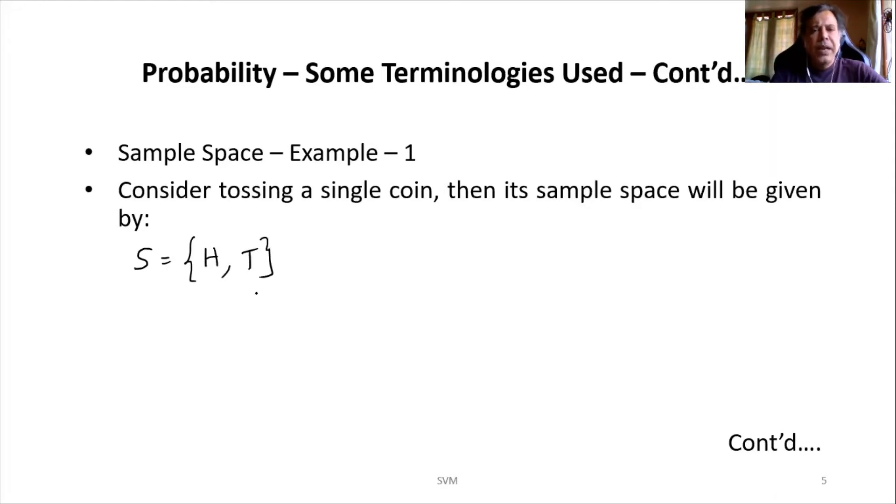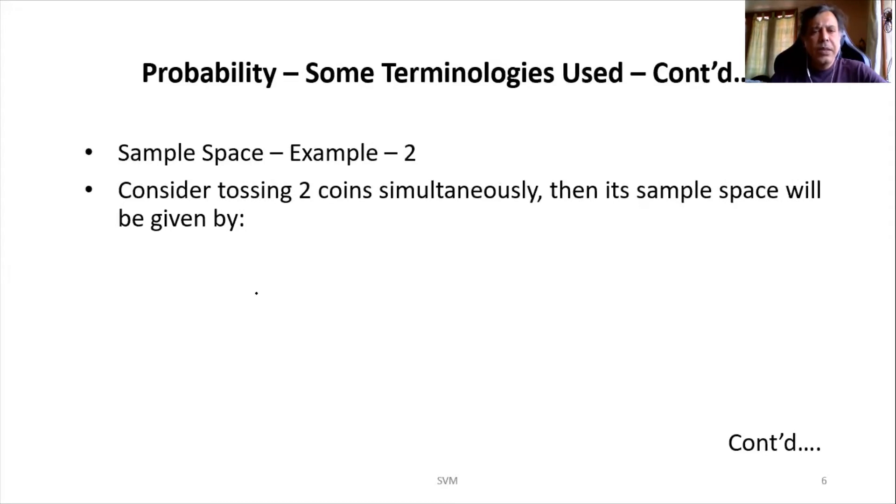Then we will move on to the next example. Consider two coins tossing simultaneously. Then what will be the sample space? So our sample space: first coin as well as the second coin, both can give me heads. That is one possible outcome. First coin can give me a head and the second coin can give me a tail.